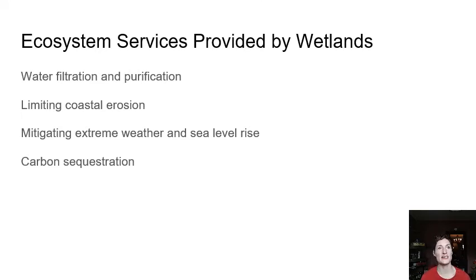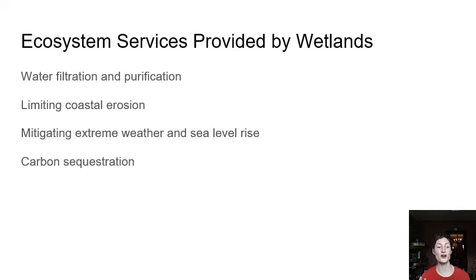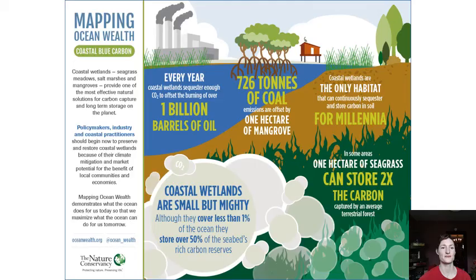Northern latitude peat bogs are a really important source of carbon sequestration. That carbon is being released because people dig up peat to use as a fuel source due to its high carbon content. Also, climate change is causing extreme warming in the northern parts of the northern hemisphere, around the North Pole, warming those peat bogs and causing breakdown of the carbon. Because it's still wet and anaerobic, we're getting a lot of methane release — so there are interesting carbon dynamics with wetlands.